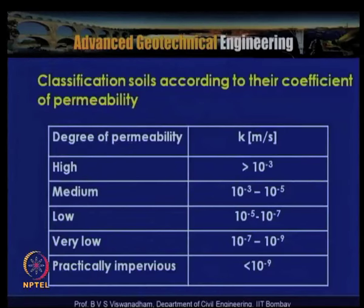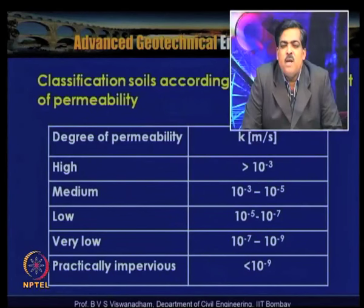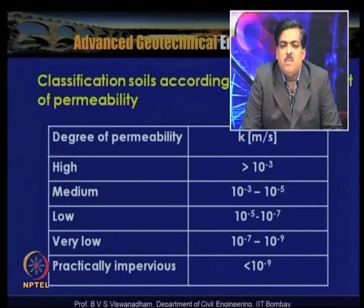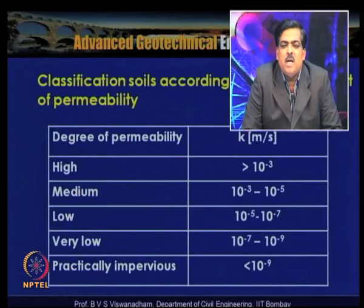Soils can be classified based on their coefficient of permeability as follows: high permeability (k > 10⁻³ m/s); medium permeability (10⁻³ to 10⁻⁵ m/s); low permeability (10⁻⁵ to 10⁻⁷ m/s); very low permeability (10⁻⁷ to 10⁻⁹ m/s); and practically impervious (k < 10⁻⁹ m/s).